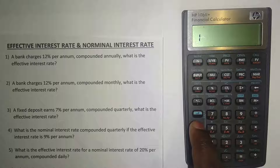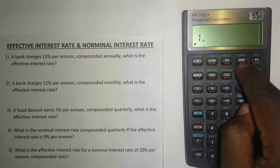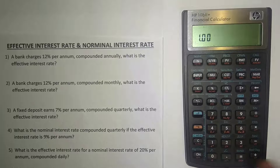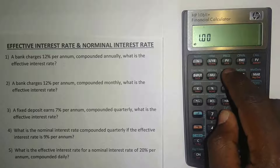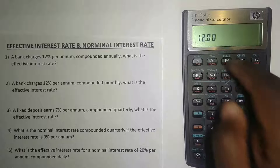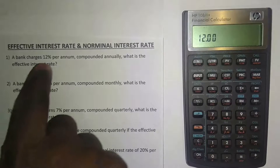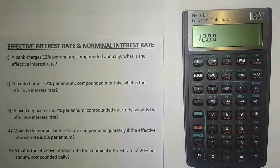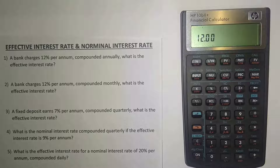Then press the orange button and press PV — you can see underneath it says 'effective percentage'. There we have it: the effective interest rate is exactly the same as the nominal interest rate because it's compounded annually. If it's compounded more than once per year they will be different, and your effective will always be higher than your nominal.